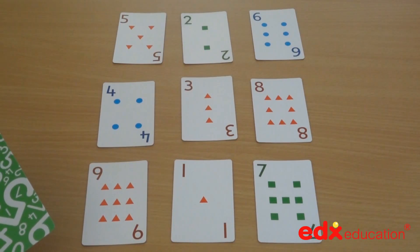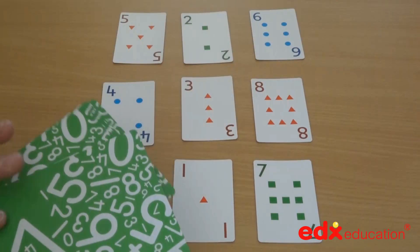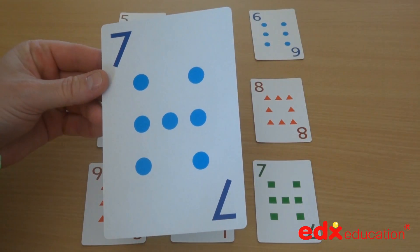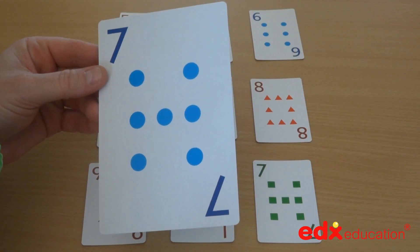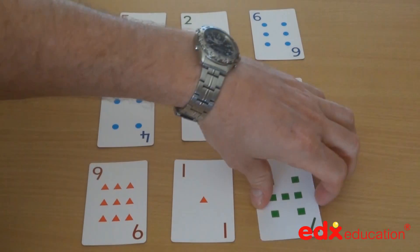For example, we could play the halving game. Once again, I've got my large child-friendly cards. If I turn over a card like seven, I would double it as the teacher. So I'd say 14, and the children have to turn over the card that is half of 14. So they'd be turning over the seven.